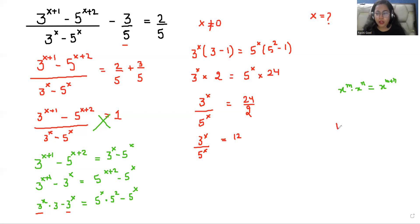We know the property of logarithmic that b power c is equals to a. We can write it as log b a is equals to c. x is equals to log 12 base 3 by 5 is our value of x.